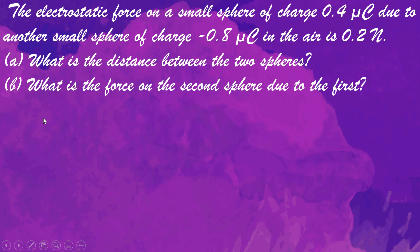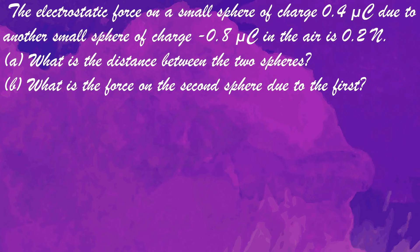The electrostatic force on a small sphere of charge 0.4 microcoulomb due to another small sphere of charge minus 0.8 microcoulomb in the air is 0.2 newton. What is the distance between the two spheres, and what is the force on the second sphere due to the first?